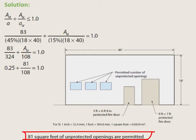As a further note, had 324 square feet of protected openings been specified, then the Unity Equation 7-1 would not have allowed any unprotected openings at all. The maximum areas for each type of opening in Table 705.8 assume that only one type of opening will be present. When both protected and unprotected openings are present, the sum of the actual areas of the openings over the permitted areas of the openings is limited to 1 per Equation 7-2. The maximum area of the...